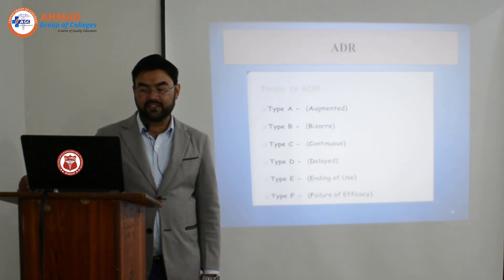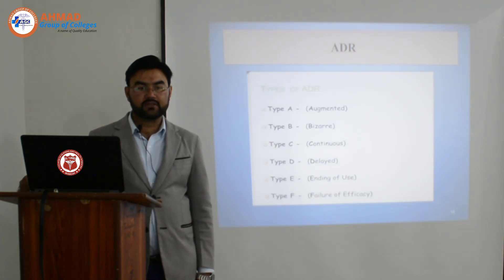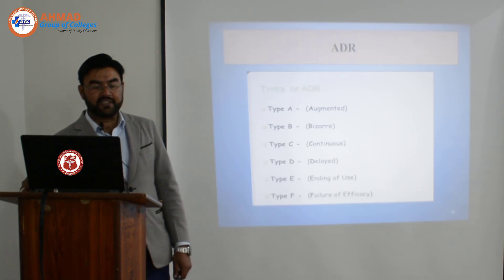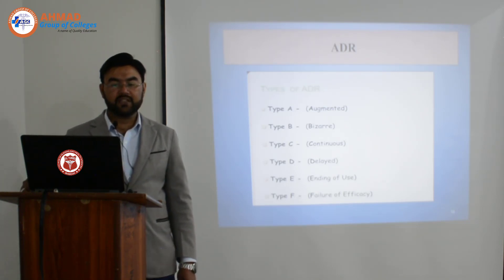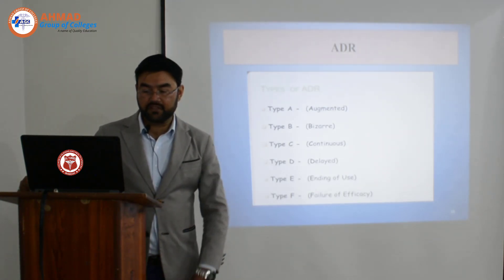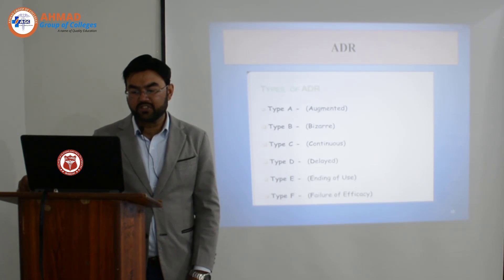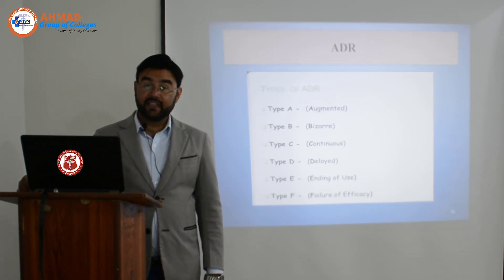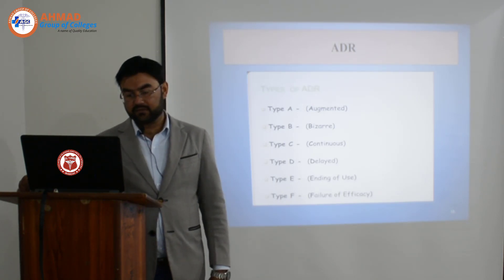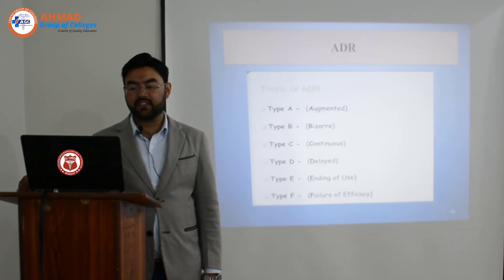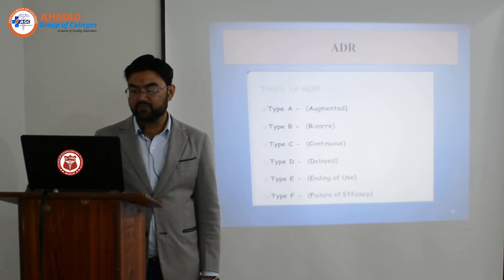There are six types of adverse drug reactions: Type A — augmented, Type B — bizarre, Type C — continuous, Type D — delayed, Type E — ending of use, and Type F — failure of efficacy.